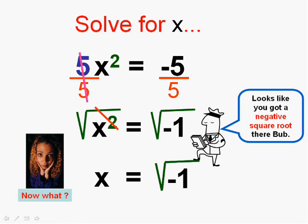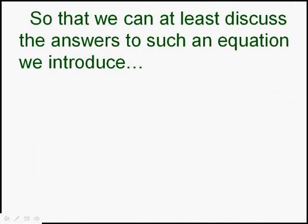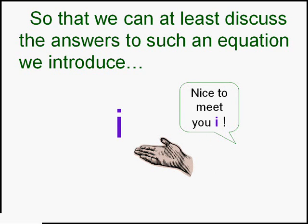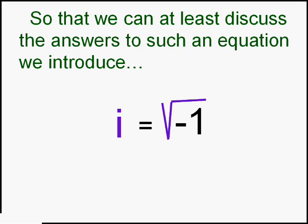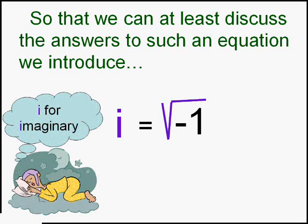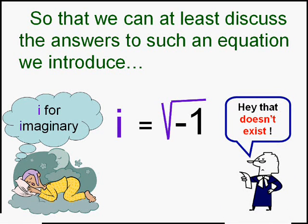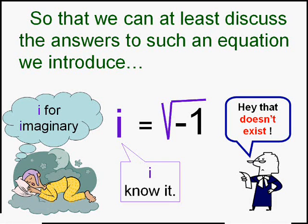As you can see, this can happen. So that we can at least discuss these answers to such an equation, we're going to introduce something different. We're going to introduce i. i is the square root of negative 1. We call him i because he's imaginary.